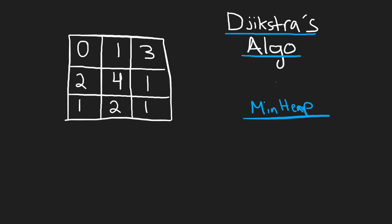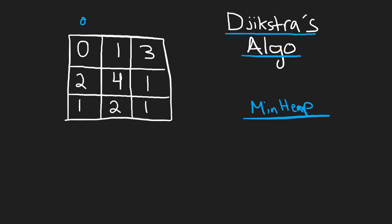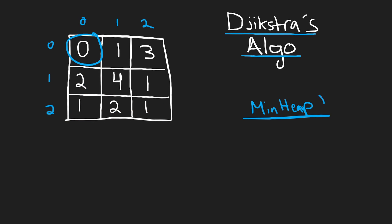We're going to use a minimum heap containing the frontier of where we are. Starting at the top left, the frontier is the adjacent positions — right and below. We add those coordinates to the heap. The key for the min heap is the height, so when we pop from it we always get the position with the minimum height. We're being greedy: we want to minimize the maximum height along the path to the result.